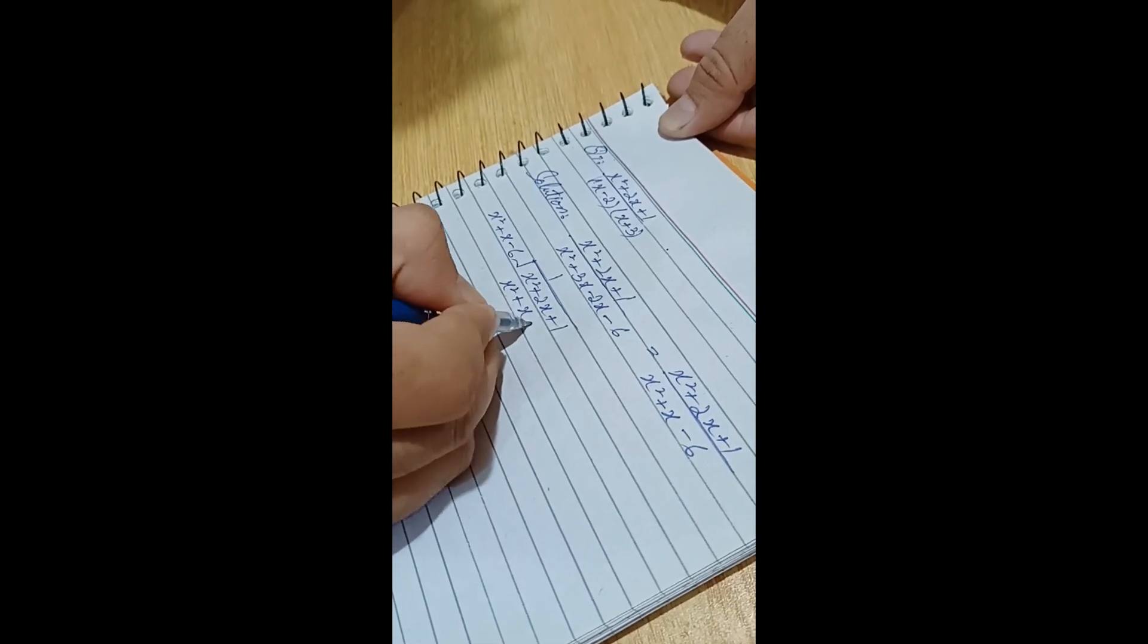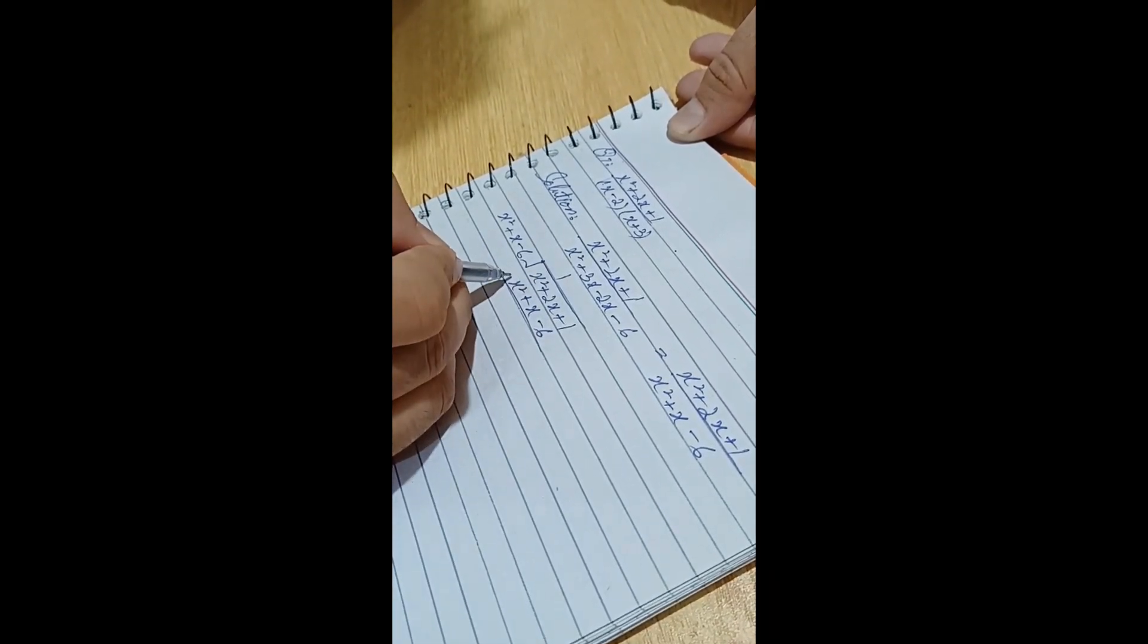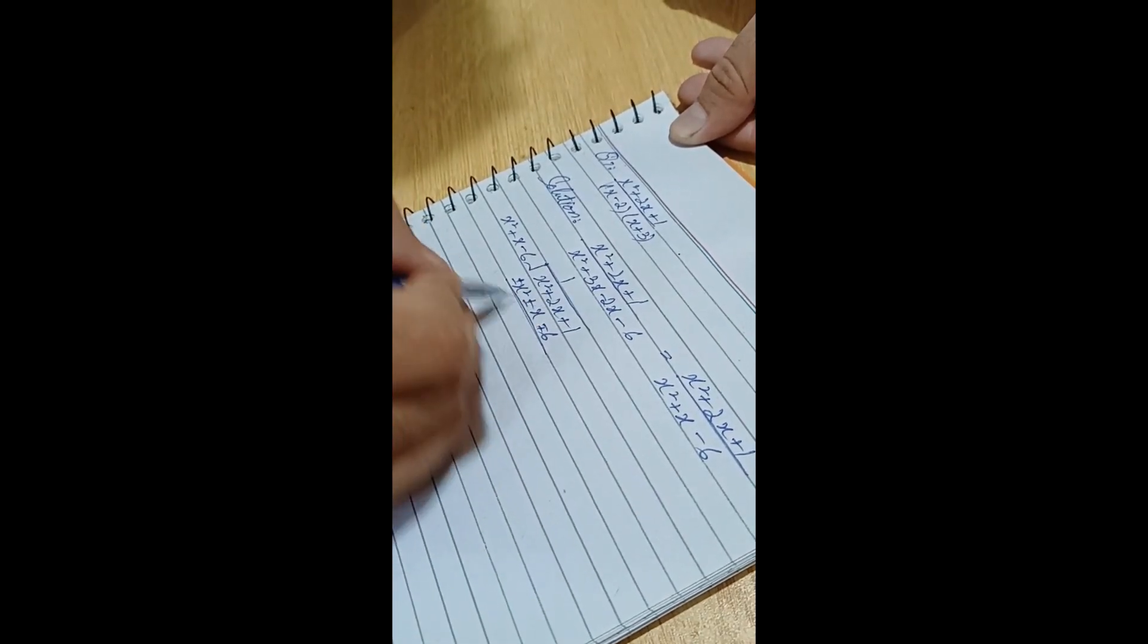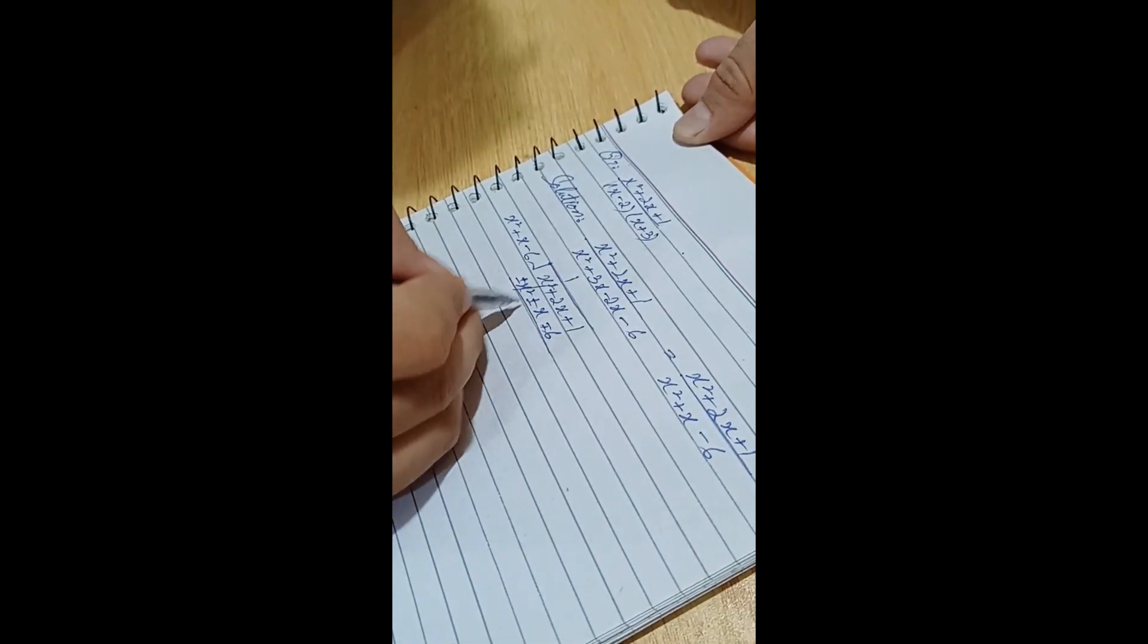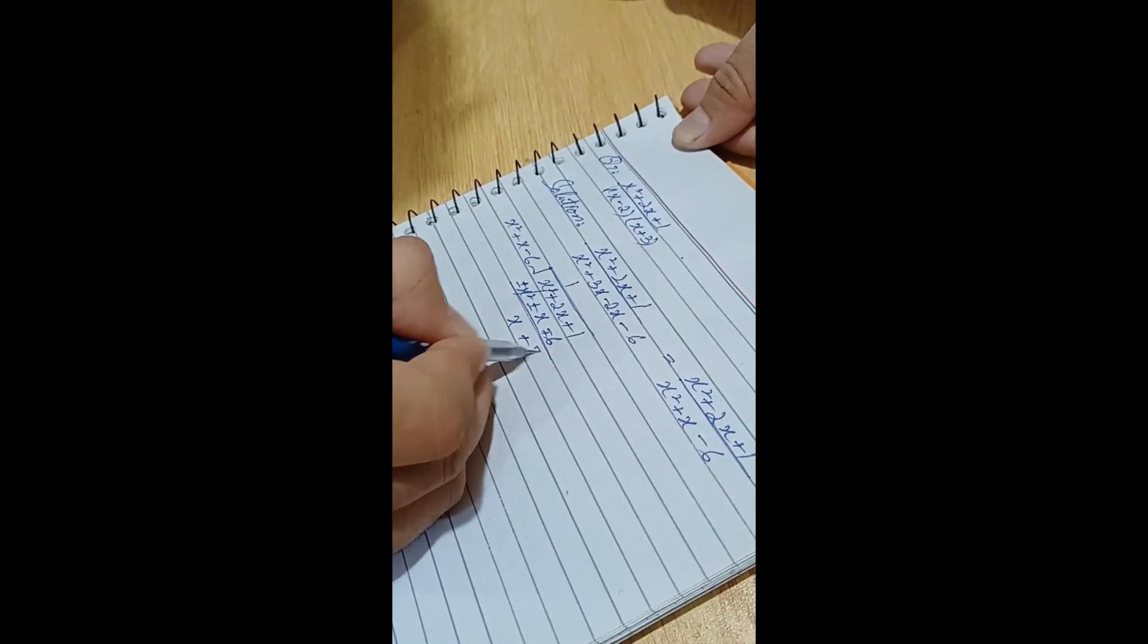over (x² + x - 6). When we divide, x will cancel and we get x plus seven. Okay.